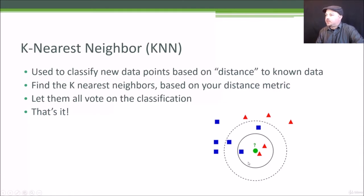Now if I were to expand this circle to include five nearest neighbors, K of five, I get a different answer. So in that case I pick up three science fiction and two drama movies. If I let them all vote I would end up with a classification of science fiction instead.